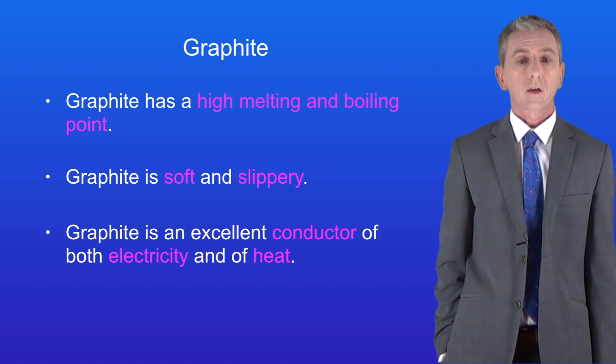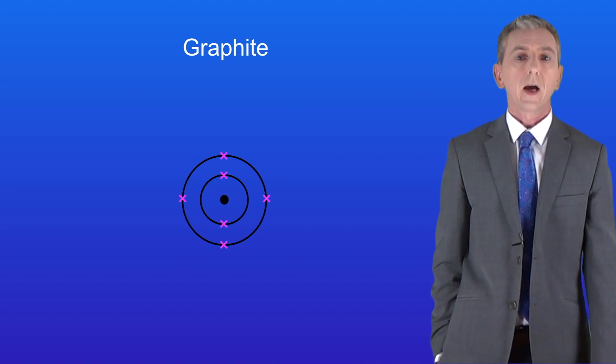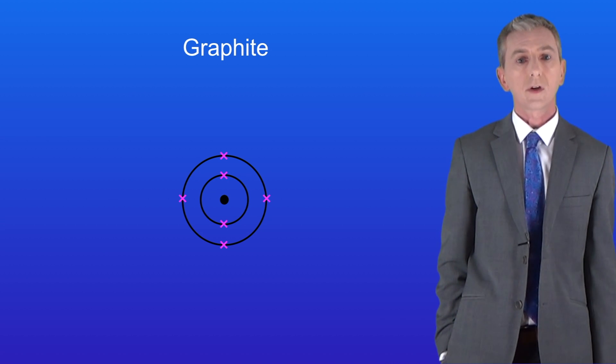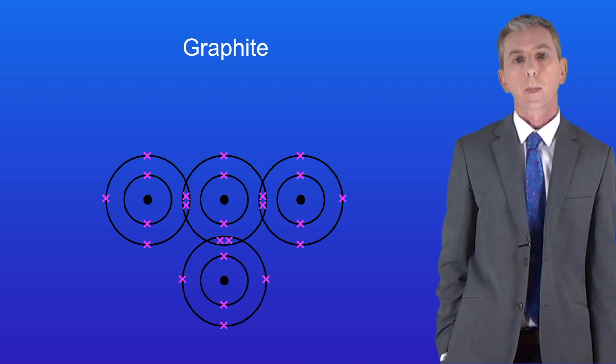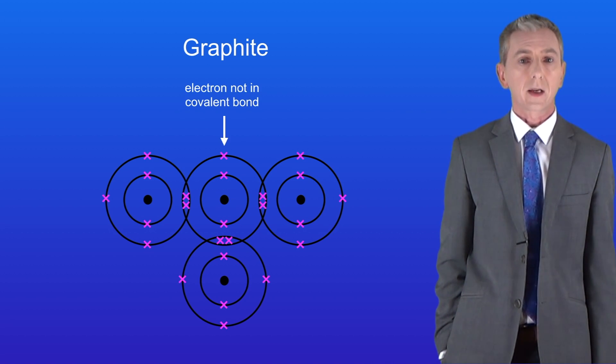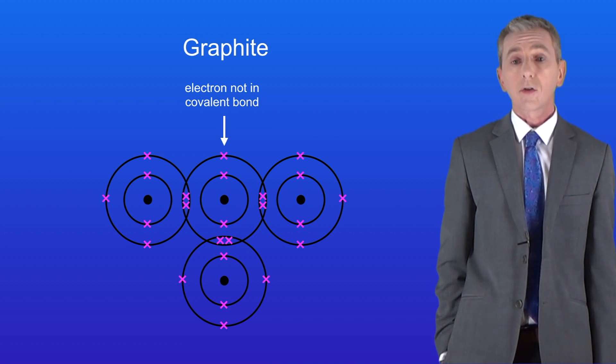Remember that graphite is formed from carbon atoms and I'm showing you the structure of a carbon atom here. As we said each carbon atom forms three covalent bonds to three other carbon atoms like this. Now as you can see that means that each carbon atom has a single electron in its outer energy level that's not in a covalent bond.